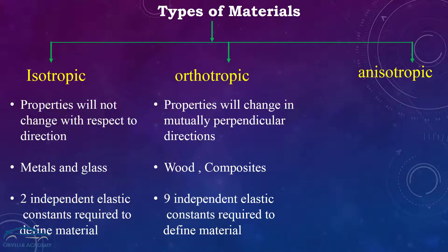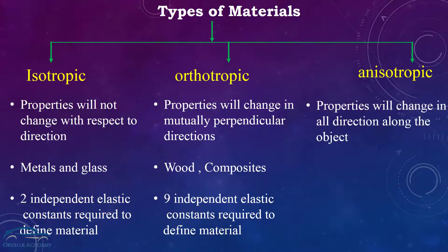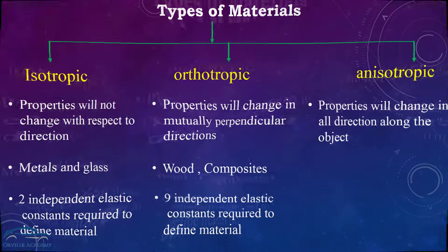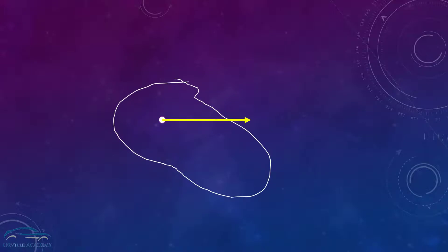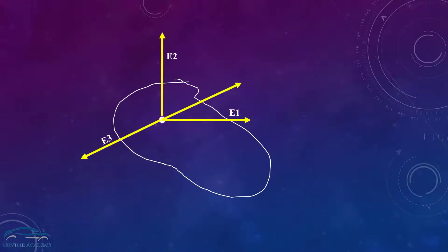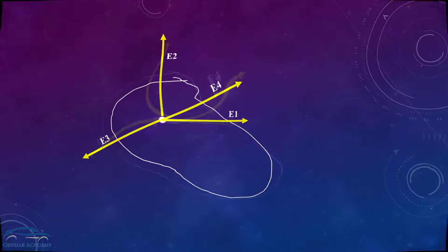Now let's move on to anisotropic material. These are materials in which properties are going to change in all directions along the object. At any point, since the properties are going to change, you have to define the properties along every important direction — as you can see, properties are changing along every direction along the object.